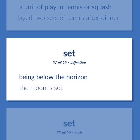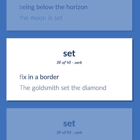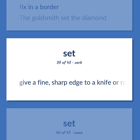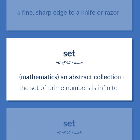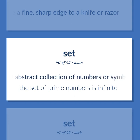Set: being below the horizon — the moon is set; fix in a border — the goldsmith set the diamond; give a fine, sharp edge to a knife or razor. Mathematics: an abstract collection of numbers or symbols — the set of prime numbers is infinite.